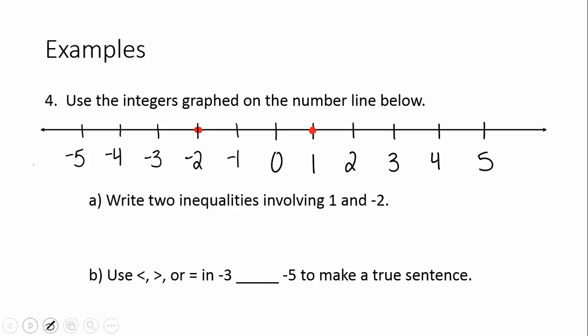Some more examples. Let's use the integers that are graphed on the number line below. The two integers graphed on the number line are negative 2 and 1. Please make sure you write this number line down and label it as I have. Letter A says we need to write two inequalities involving the numbers 1 and negative 2. If we start with negative 2, because it's to the left of 1, that means it's less than 1. Negative 2 is less than 1.